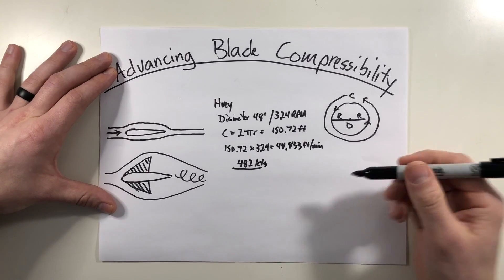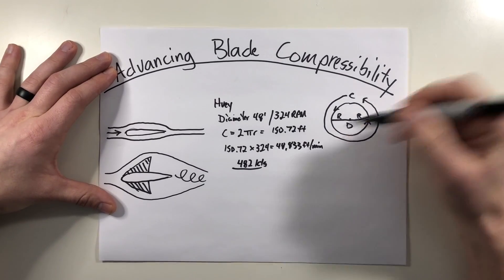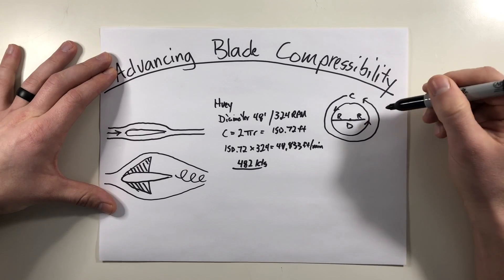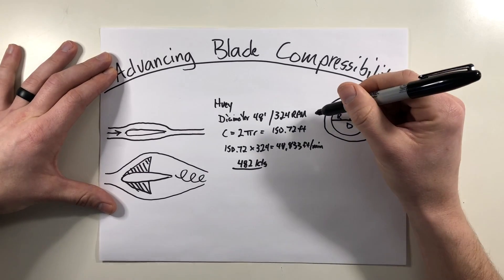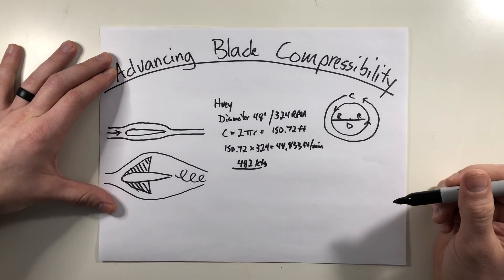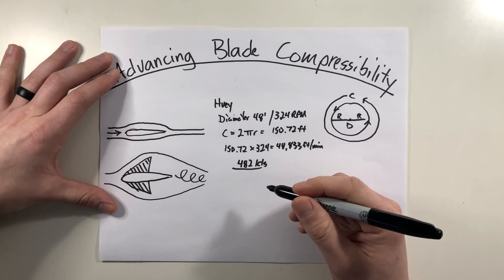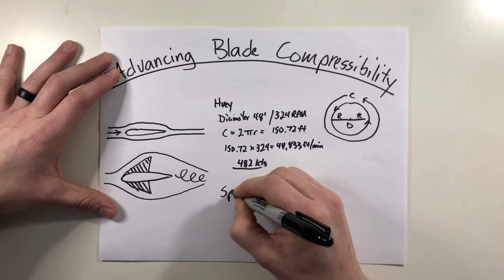So if I were to fly at 100 knots, the advancing blade is going to get that extra 100 and have 582 knots of airspeed, whereas the retreating blade is going to have 382 knots of airspeed. So now let's look into the speed of sound and we'll start comparing these.